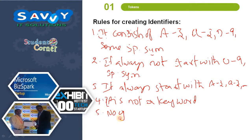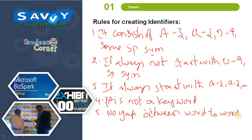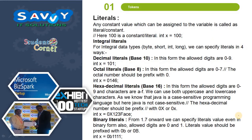There must be no gap between words in an identifier. Based on these rules, we create a valid identifier.